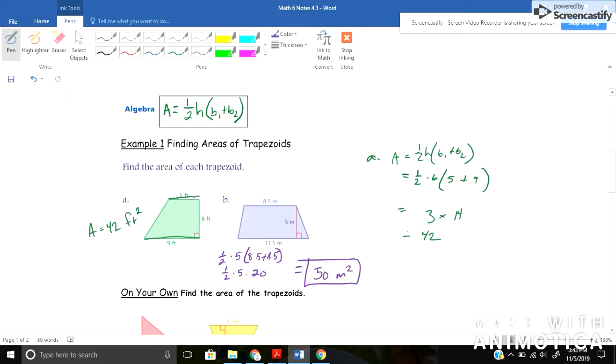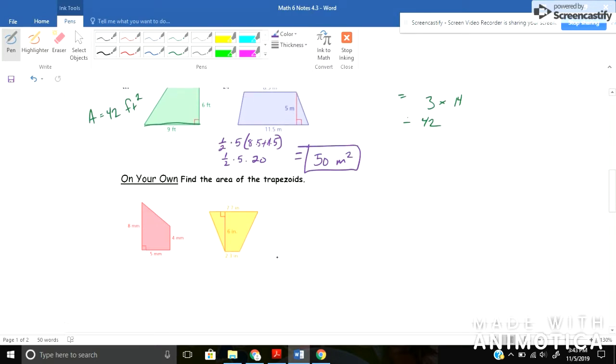Okay, go ahead and try out the two on your own problems here and see if you can get the right answer. Okay, hopefully you've had a chance to do that. For the first one you'll notice what's different now is our two bases are on the sides and our height is right here. Yeah, so half times five times our two bases added together would be twelve. So you should come up with a total of thirty millimeters squared.